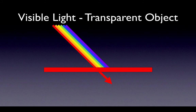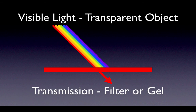When photons hit a transparent object, only some are allowed through, depending on the color of the object. The object absorbs all other wavelengths. If the light hitting the transparency is white, it looks like the transparency is changing the color of the light — but it's not; it's just filtering out part of it. Transparencies like this are called filters or gels. They're used to control the color of light on a scene or entering the camera.